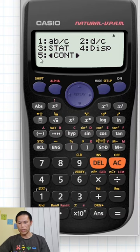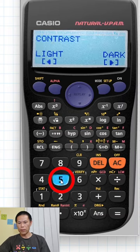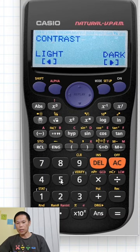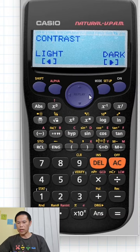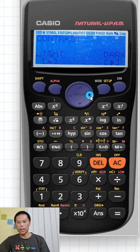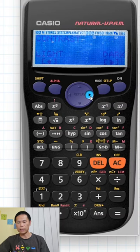If you press five, there you go, this is the contrast options. If I press this arrow here on the place button, if I just press and hold down, it's getting darker and darker, see.